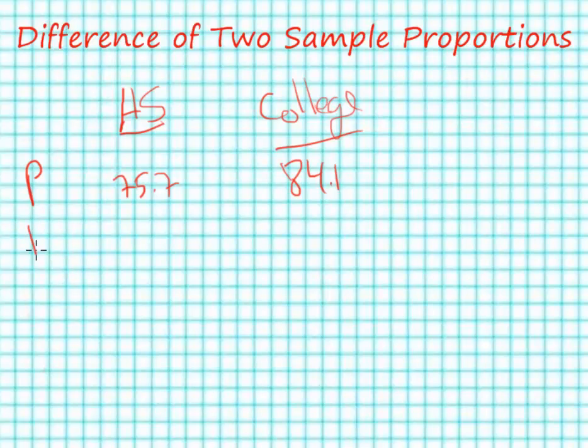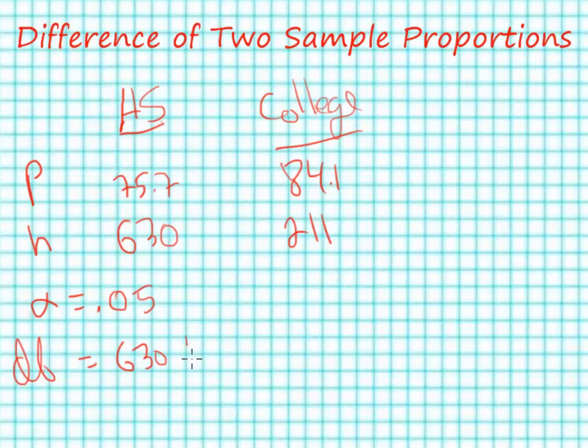To complete this problem, we need to know our sample sizes: 630 individuals who completed a high school degree and 211 individuals who completed a college degree. I'm going to set my alpha value to 0.05 two-tailed, and I have my degrees of freedom equal to my two sample sizes added together minus two, which is 839. So very large sample, and I happen to know right off the bat that my t-critical is going to be plus or minus 1.96, looking it up in the t-table.